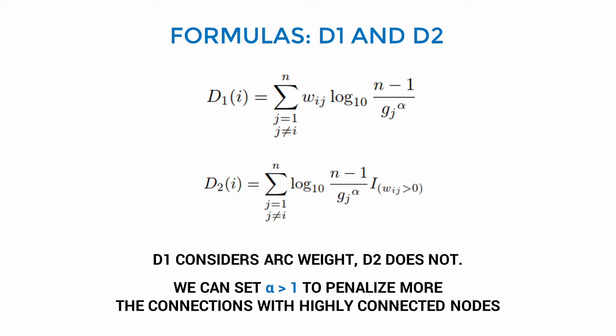In all the formulas of distinctiveness, we have an alpha coefficient that can be set bigger than 1 to allow a stronger penalization of connections with highly connected nodes. It is important to notice that for alpha bigger than 1, the logarithmic term can become negative.